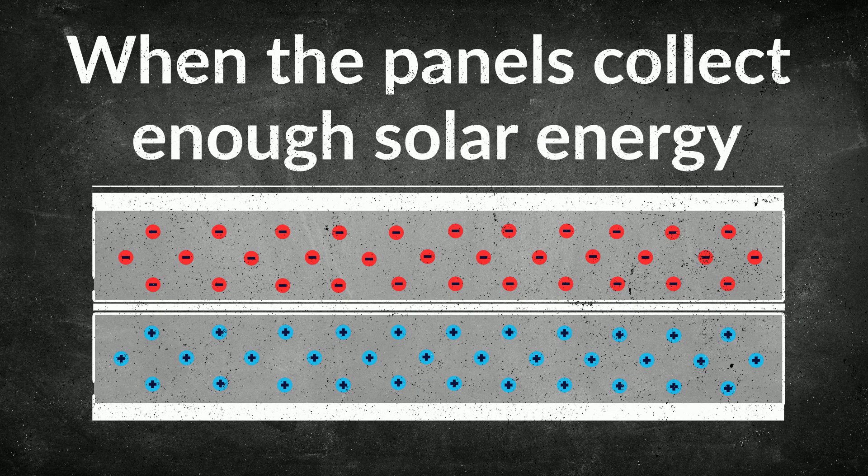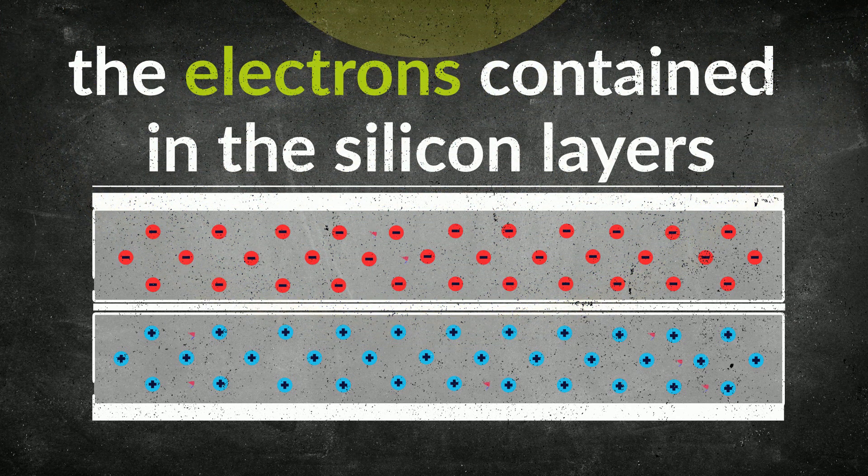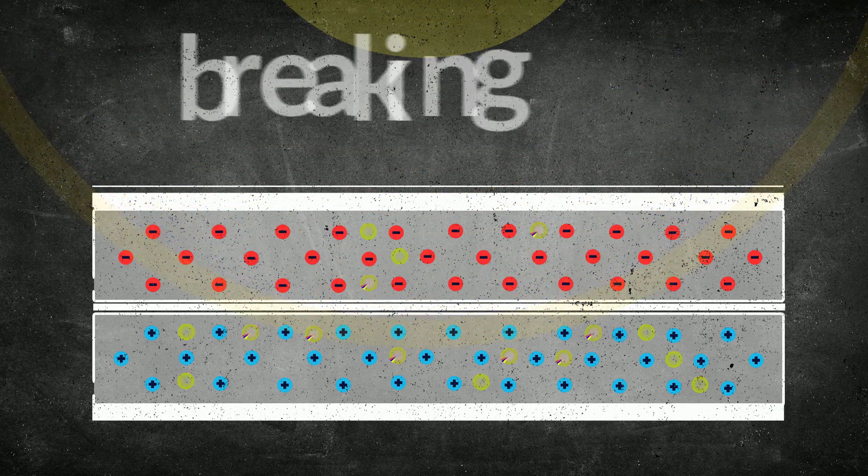When the panels collect enough solar energy, the electrons contained in the silicon layers become excited, breaking free of their bonds.